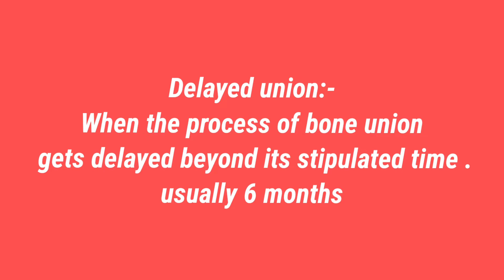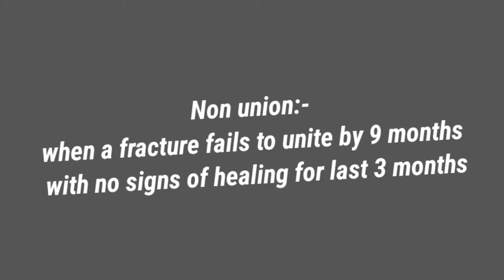doesn't unite within its stipulated time of union. A fracture normally unites by three to six months after the fracture has occurred. If the fracture is not progressing or not getting united by six months, we call it a delayed union. And what is non-union? If a fracture is not united even after nine months,